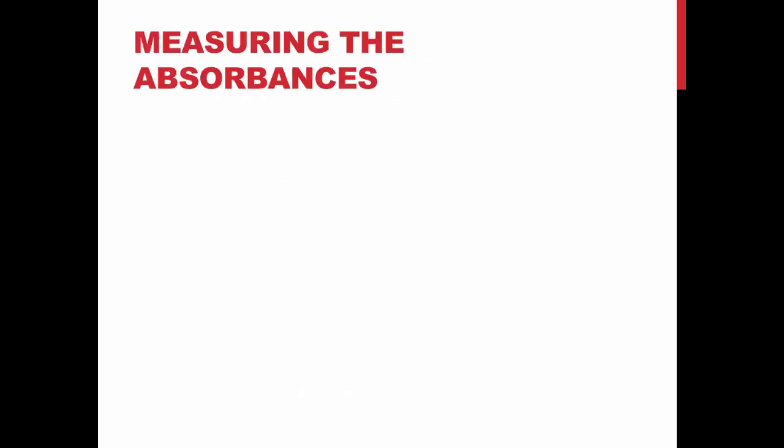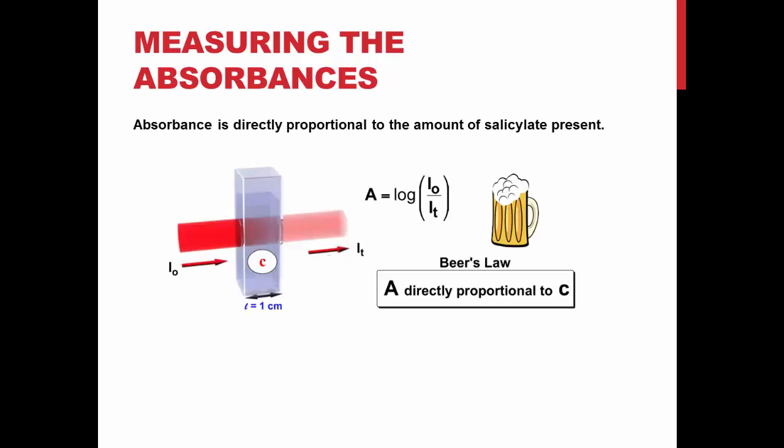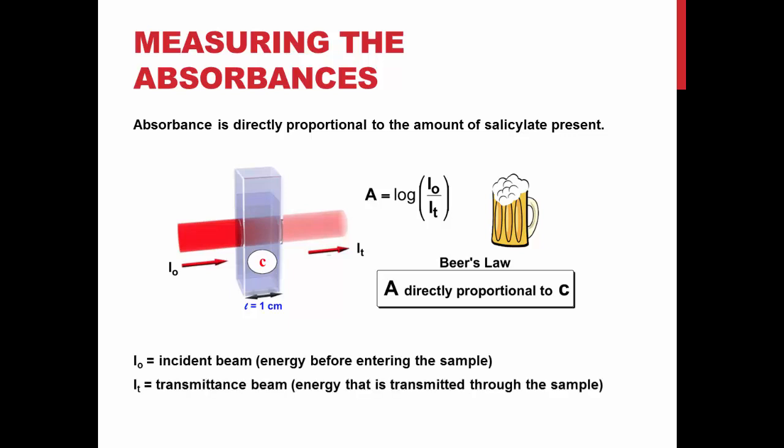Next, you will be measuring the absorbances of each test tube. Absorbance is directly proportional to the amount of salicylate present. This is known as Beer's Law. Absorbance, A, is directly proportional to concentration, C, where I₀ is the incident beam and I_T is the transmitted beam — the energy that has been transmitted through the sample.